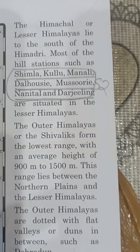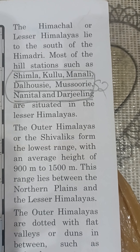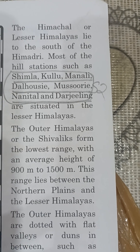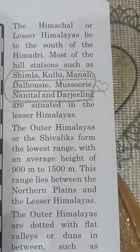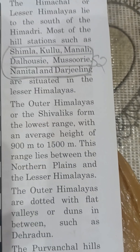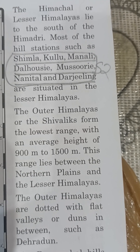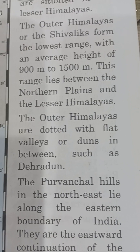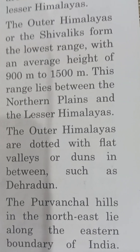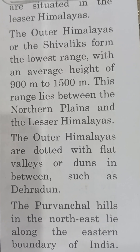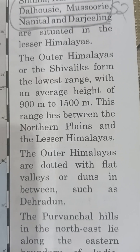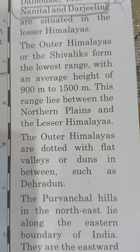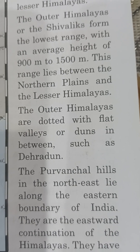The Himachal, or Lesser Himalayas, lie to the south of the Greater Himalayas. Most of the hill stations such as Shimla, Kullu, Manali, Dalhousie, Mussoorie, Nainital, and Darjeeling are situated in the Lesser Himalayas. The outer Himalayas, also called the Shivalic range, form the lowest range. Their average height is 900 to 1,500 meters.